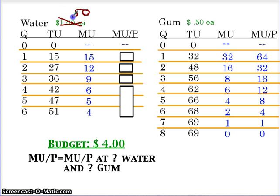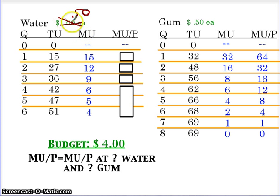When you do this on the test or on a practice exercise, if you need to create a demand curve for one of the products, assess mu over p equals mu over p at one price, then put your plot point, then come back to the numbers and change the price tag of the product that you need to create a demand curve for, and then reassess.